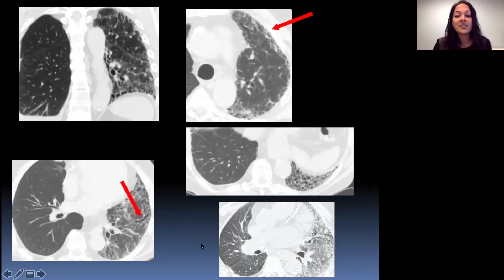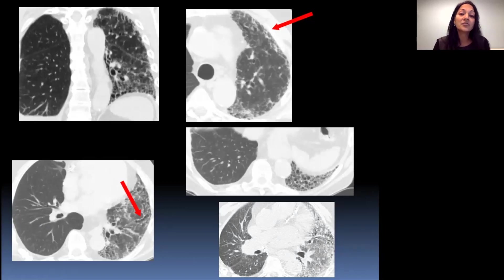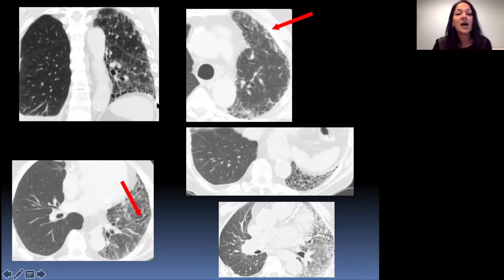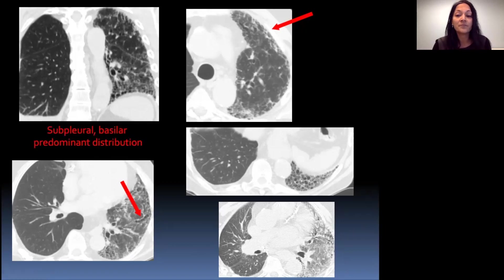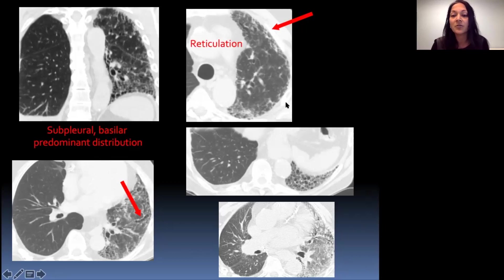Looking at the imaging here, you can see a variety of different images from one patient — a patient who had biopsy-proven UIP and was given a diagnosis of IPF. They underwent a single lung transplant, so the normal lung is the transplanted lung and the diseased lung is the native lung. In the coronal image, you can see the findings are greatest in the lower lungs and are predominantly subpleural — a subpleural basilar predominant distribution. The arrow points to reticulation showing multiple crisscrossing lines consistent with subpleural reticulation.